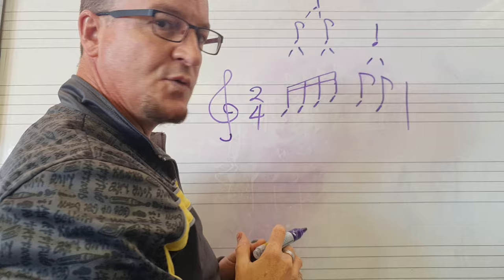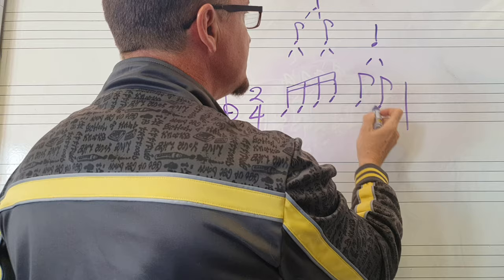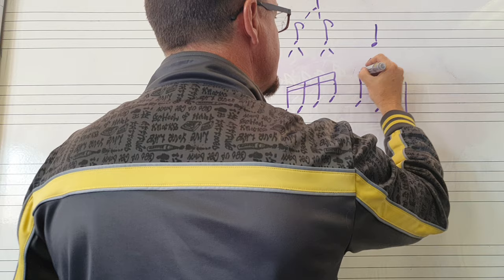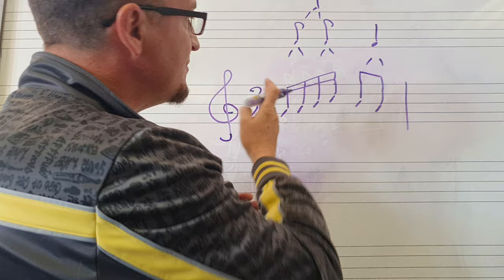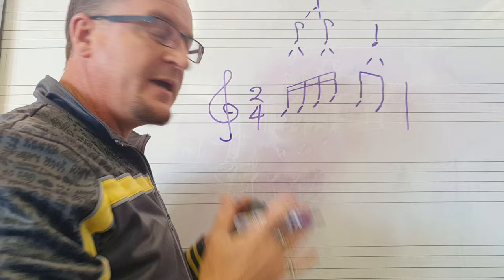Coming to the second group, we know that two quavers make up a crotchet, and we can beam these two notes together to make it nice and neat. Now look how your eye sees the two crotchet beats — that is a crotchet beat, and that is a crotchet beat. What beaming does is it makes it easier for the musician to see where the beats in the bar fall.